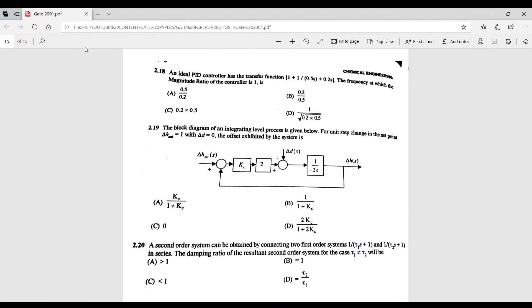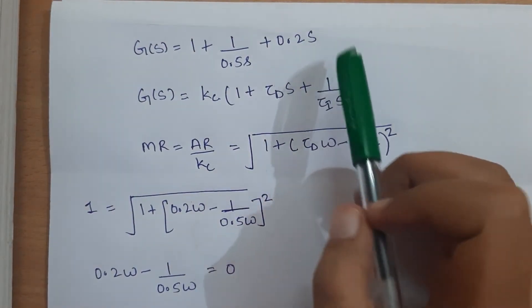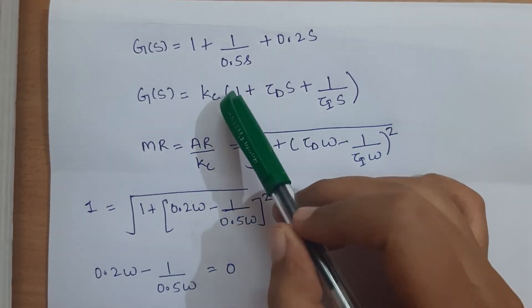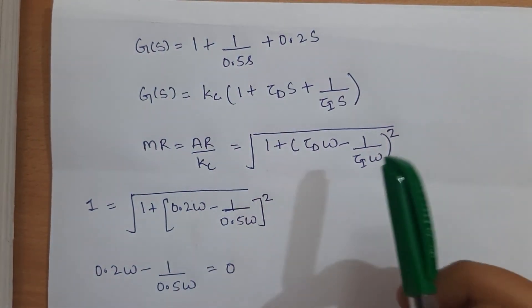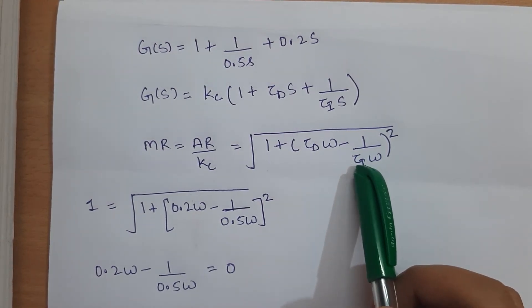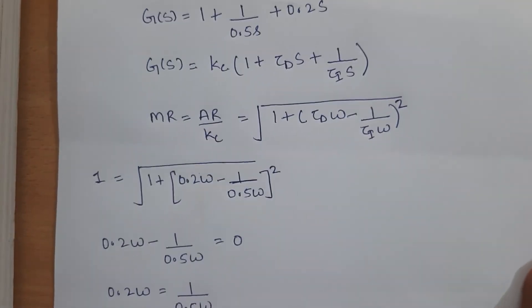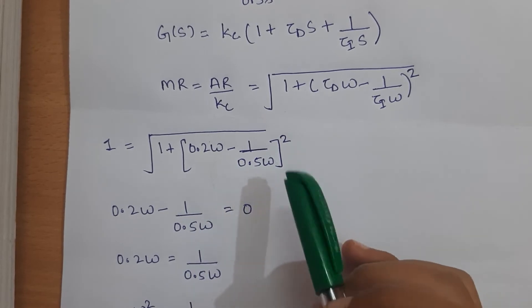Question 2.18: the transfer function of a PID controller is given and we must find the frequency at which the magnitude ratio equals 1. For this PID controller, τD = 0.2 and τI = 0.5. The magnitude ratio of a PID controller is given by a standard formula from any process control textbook. Substituting τD and τI gives the magnitude ratio expression.